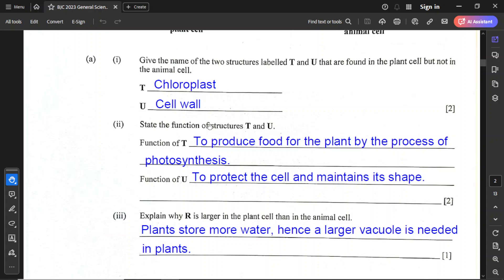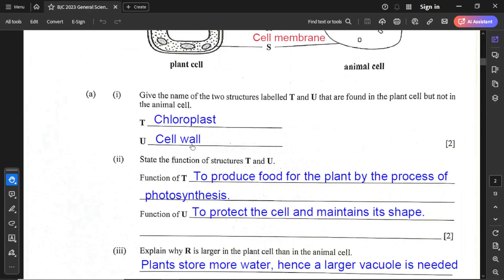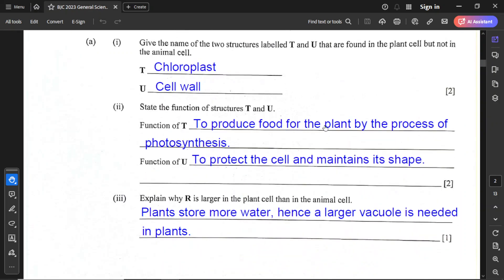For part A2, state the function of structures T and U. Structure T, which is the chloroplast, is used to produce food for the plant by the process of photosynthesis. So generally, it carries out photosynthesis to make food. For structure U, which is the cell wall, it's used to protect the cell and maintain the shape of the cell.